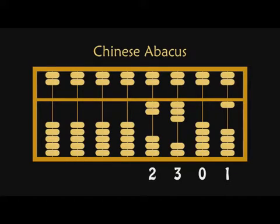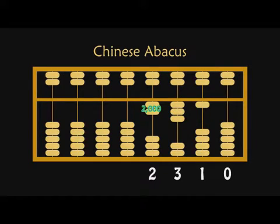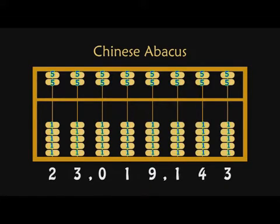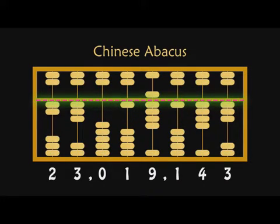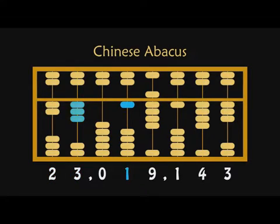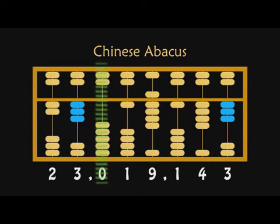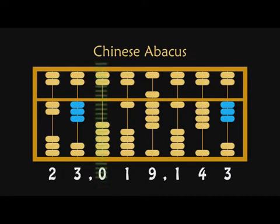Order also matters in the Chinese abacus. Here's 2,301, which is different from 2,310. The upper beads are worth 5, and the lower beads are worth 1. You can count all of the beads touching the central bar. This is roughly the population of Shanghai: 23,191,43. Notice that the same 3 pattern means 3 or 3 million, depending on where it is. Notice the zero — number systems which rely on place value really need this zero. This abacus system has a pattern of beads which means zero, namely that the central bar doesn't have any beads touching it.